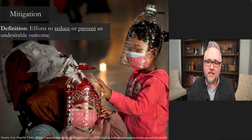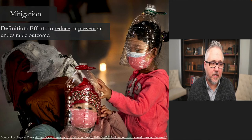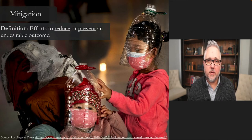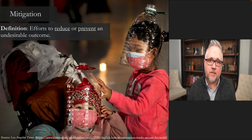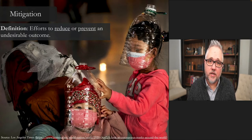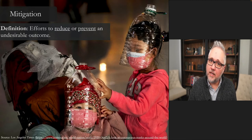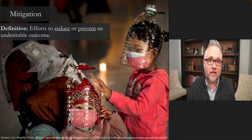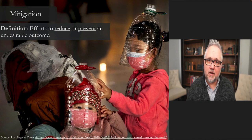Mitigation is efforts to reduce or prevent an undesirable outcome. This photo from the early stages of the pandemic in 2020 shows multiple layers of face masks — an effort to try to reduce or prevent the undesirable outcome of getting sick. Mitigation efforts can also relate to a whole range of undesirable outcomes we've talked about in class, from droughts to famine, to natural resource destruction or exploitation that can increase corruption. The goal is the same: to try to reduce or prevent a bad thing from happening.